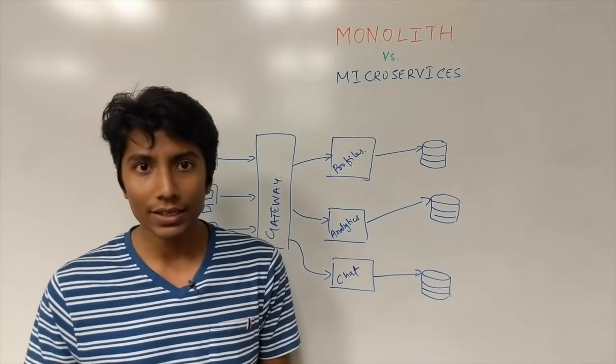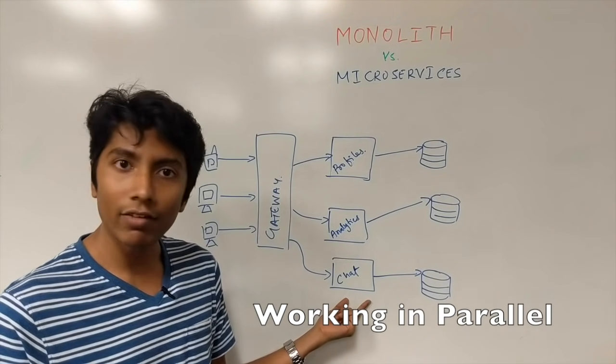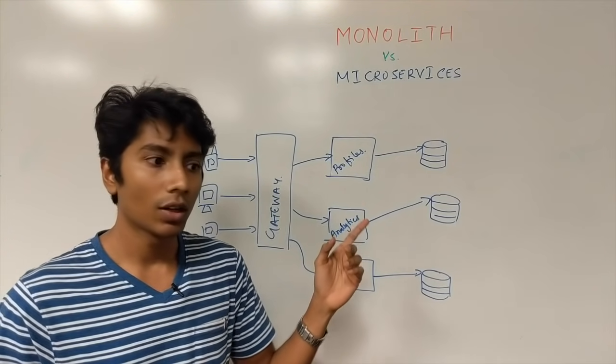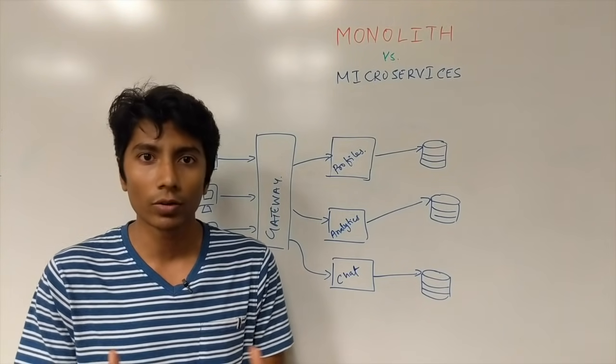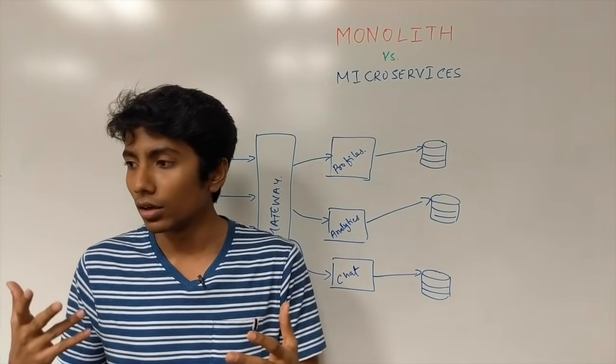The third point is that parallel development is easy because there is lesser dependency for the chat developers on the analytics developers now. Because they can develop at the same time. In the monolith, maybe one function is calling the other function and it's changing, so there's a lot of coupling, tight coupling not just in code but also in the developer time.